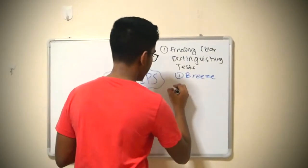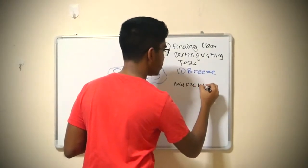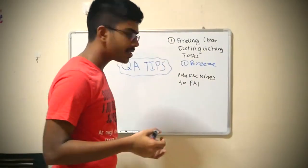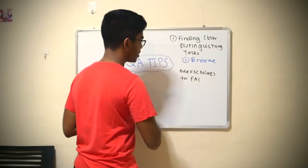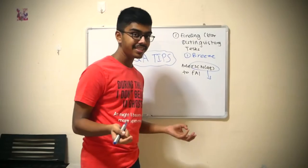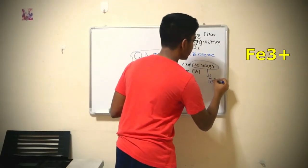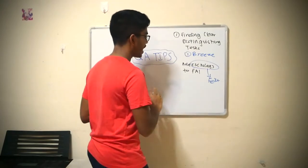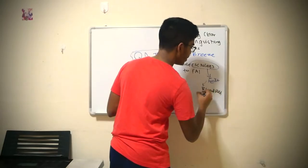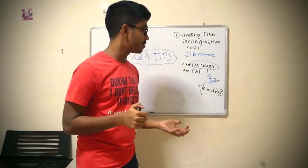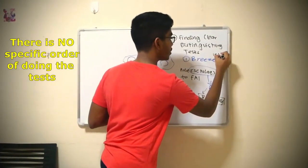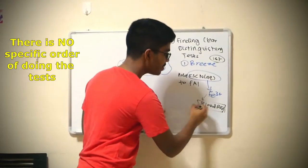For example, they say add KSCN aqueous to FA1, and they ask you to state the observation. Now, this is a really good test because KSCN tests for a cation. What is it? An Fe3+ ion. And the expected observation, if the ion exists, would be a blood red solution. So what you can do is start with this test first. And if this test gives you a blood red precipitate, you 100% know that there is an Fe3+.